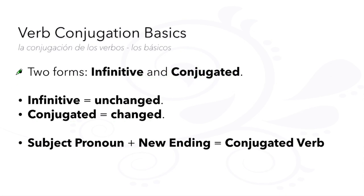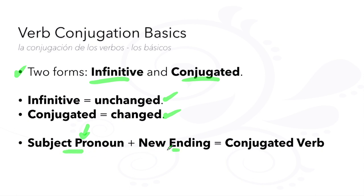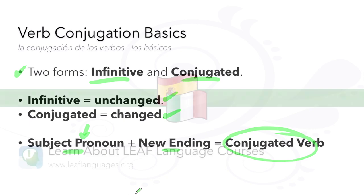Don't forget that verbs have two major forms: infinitive and conjugated. Infinitive means that it's not changed and it still has its ending. Conjugation means that it's changed by adding a subject pronoun, which also includes a new ending — and that's how we get a conjugated verb.